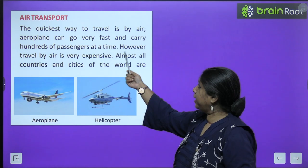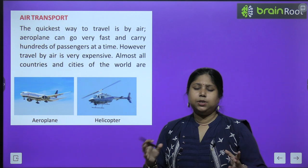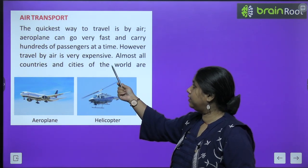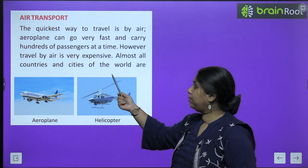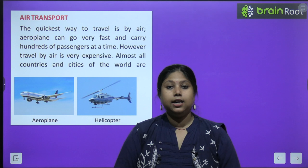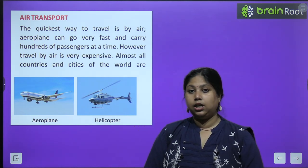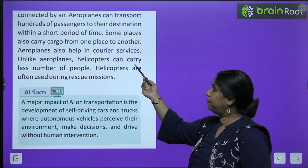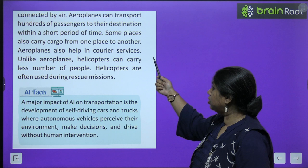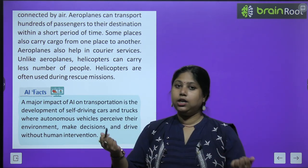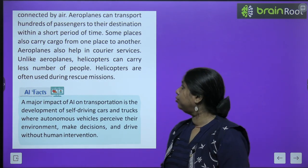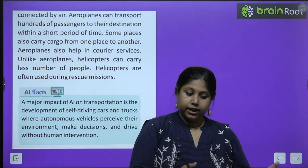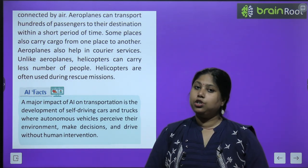Next is air transport. The quickest way to travel is by air or aeroplane. It goes very fast and carries hundreds of passengers at a single time. However, travel by air is very expensive. Almost all countries and cities of the world are connected by air. Aeroplanes can transport hundreds of passengers to their destination within a short period of time. Some planes also carry cargo from one place to another.